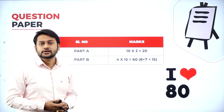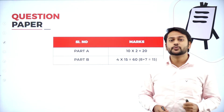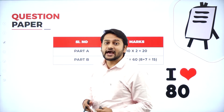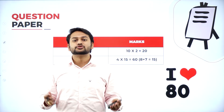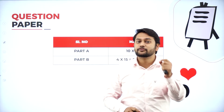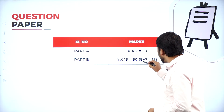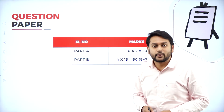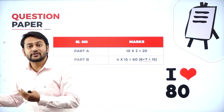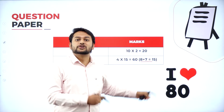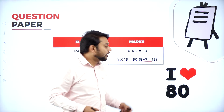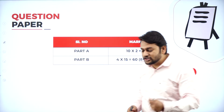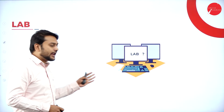For the question paper pattern: you will have two parts, Part A and Part B. Part A has 10 questions, each carrying 2 marks. Part B has 4 questions, each carrying 15 marks. For the 15-mark questions, you can expect splits — for example, 8 and 7, or 4 and 4, or 5 and 3. Any split is possible. That is the question paper pattern.